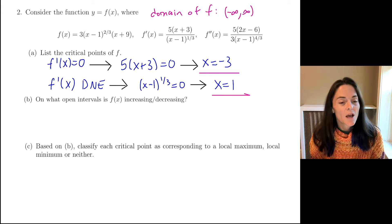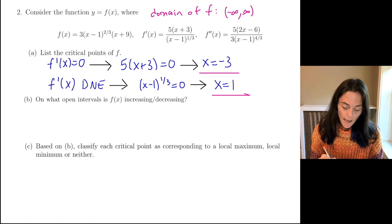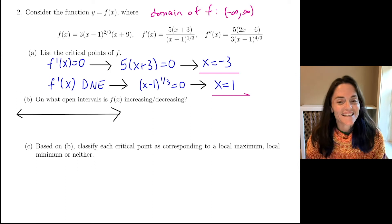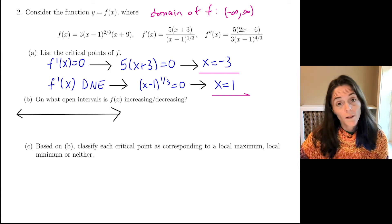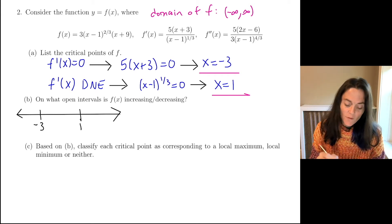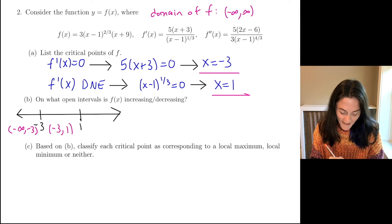My critical points are negative 3 and 1. Next, on what open intervals is the function increasing and similarly decreasing? Here, we divide the domain into open intervals based on the critical points. The domain is the whole real line. So I have minus 3 and 1, and I can write the open intervals underneath: minus infinity to minus 3, minus 3 to 1, and 1 to infinity.